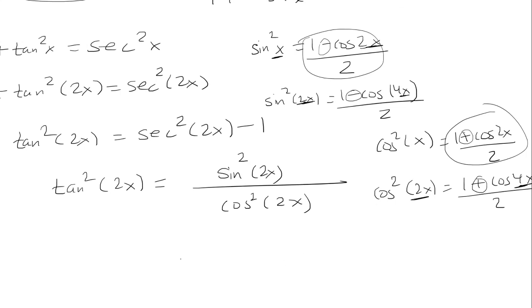So now I'm going to divide these two. Sine squared 2x we said is 1 minus cosine 4x over 2, and that's all over cosine squared 2x, which is 1 plus cosine 4x over 2.